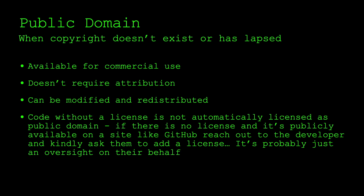The first type of software licensing is public domain — that's software where copyright doesn't exist or has lapsed. You can use it for commercial use, you don't need to attribute the creator, and it can be modified and redistributed. It's important to note that code without a license is not automatically public domain. If there's no license on something publicly available on a site like GitHub, reach out to the developer and kindly ask them to add a license.